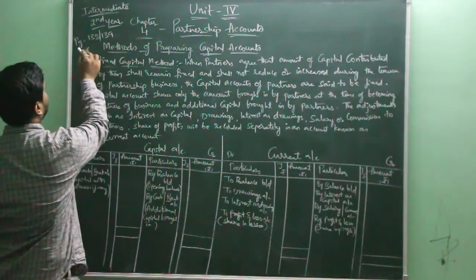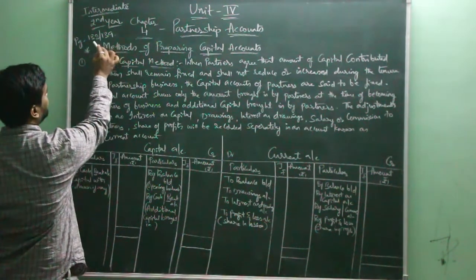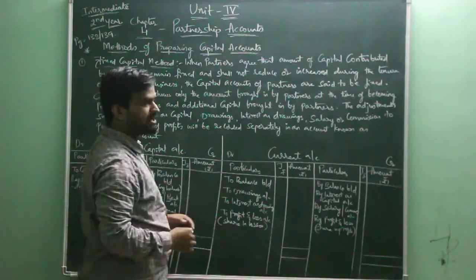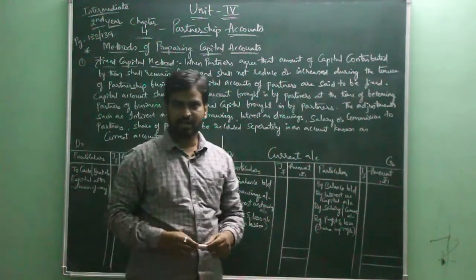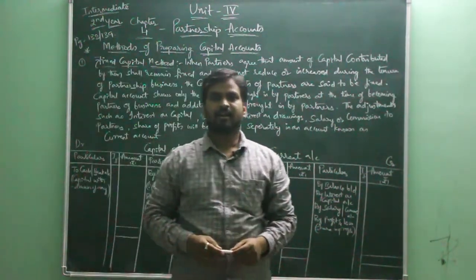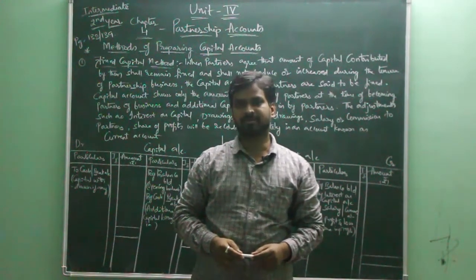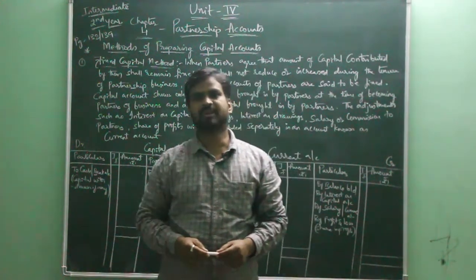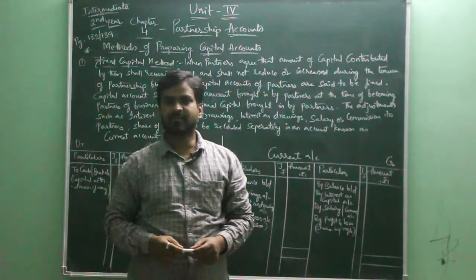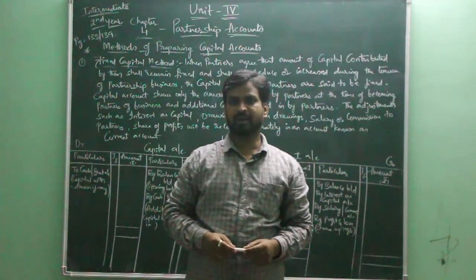If you refer the reader, the page numbers are 138 and 139. There are two methods of maintaining a partner's capital account. A partner's capital account can be maintained under the fixed capital method and the fluctuating capital method.